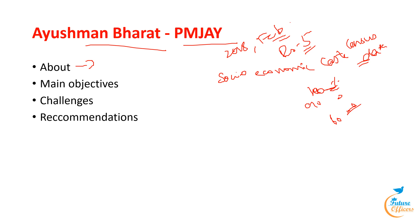The challenges seen under the scheme: the first challenge is lack of awareness. Potential beneficiaries are not well informed, particularly in rural areas. A large number of eligible beneficiaries are unaware of their benefits or how to use them. To raise awareness and demand, the program's outreach and communication efforts must be strengthened.